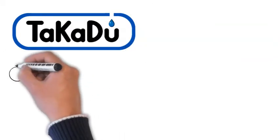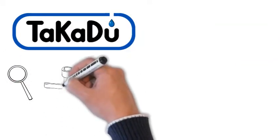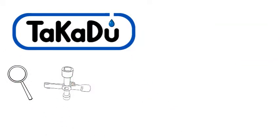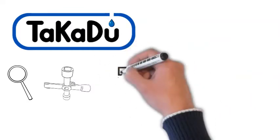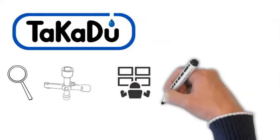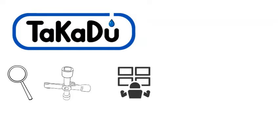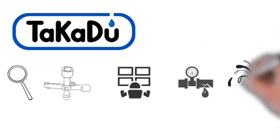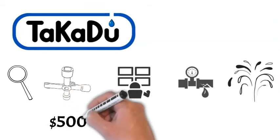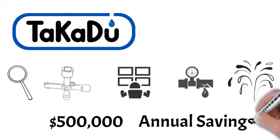With the Takadu solution, detecting and repairing the non-working or non-communicating meters is faster, improving the utility's visibility and monitoring capabilities. This reduces the risk of not detecting leaks and indirectly reduces water loss. In our example, the expected additional contribution to the annual savings is around $500,000.